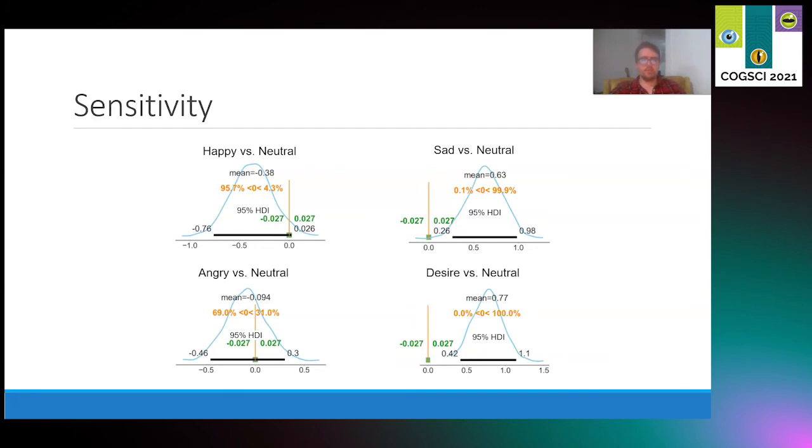Last, turning to noise sensitivity, we found that people in the happy condition versus neutral were more explorative or stochastic in their decision making, and that people in the sad and desire conditions versus neutral were more exploitative or deterministic in their decision making.